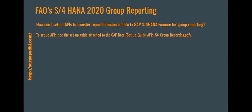How can I set up an API to transfer the reported data to SAP S/4HANA Finance for Group Reporting? SAP has provided a how-to guide — please follow the OSS note mentioned in the earlier slides.